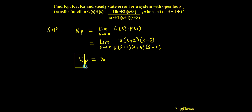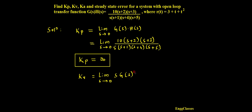Let me put a box for this — Kp = infinity. That is the first parameter found. Similarly, let me consider the expression for Kv. Kv stands for velocity error constant, and this has the formula: Kv = limit as s tends to 0 of s·G(s)H(s). If I know the formulas for Kp, Kv, and Ka, I can find these parameters quite easily.